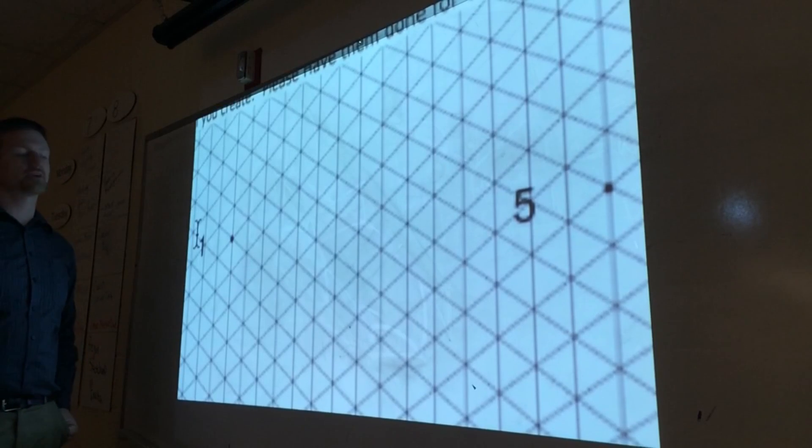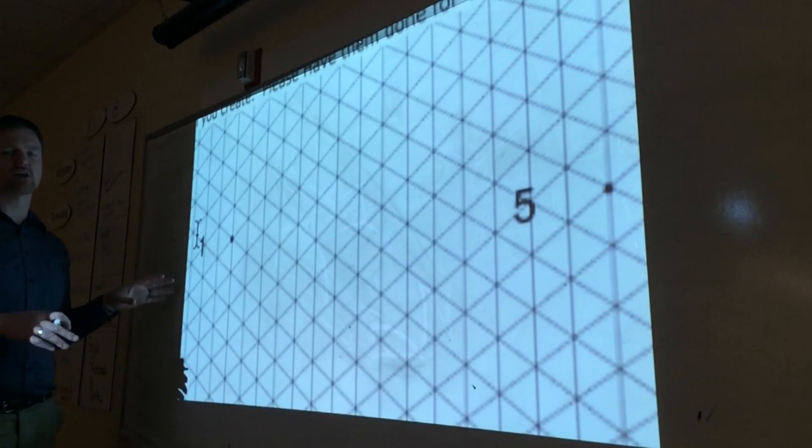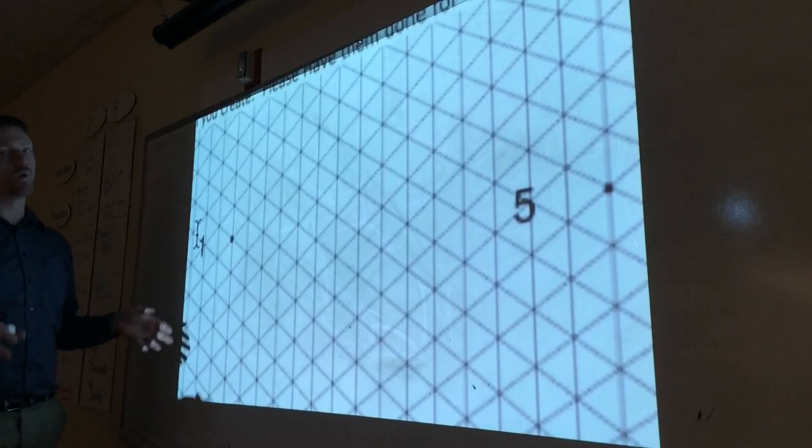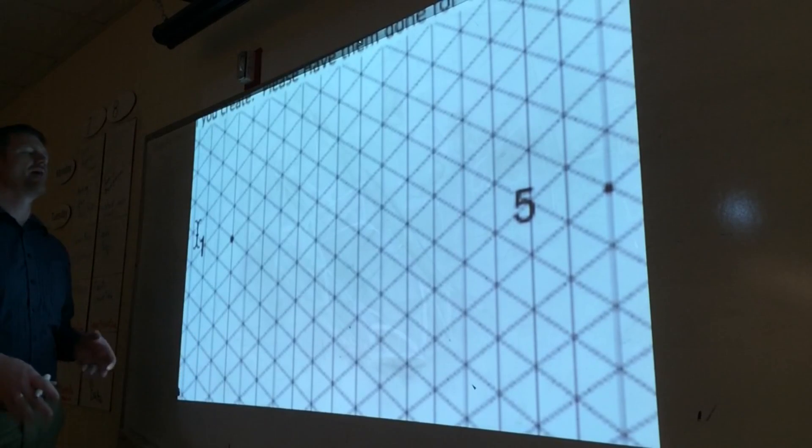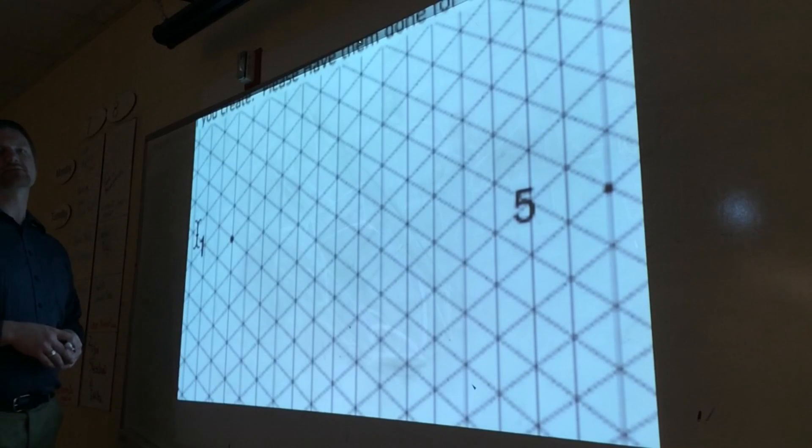We're going to begin with isometric graph paper to draw thumbnail sketches of our car. Sketches should be quick, one to two minutes per sketch in isometric view, so that's why we have this isometric graph paper here to help us out.